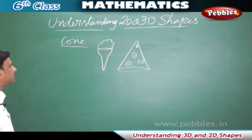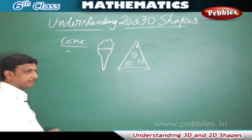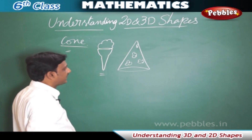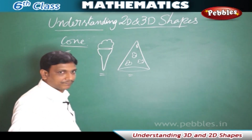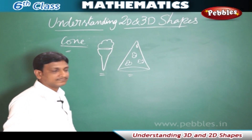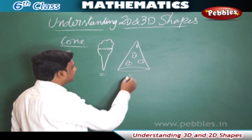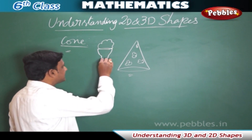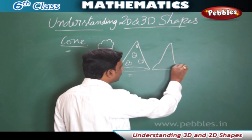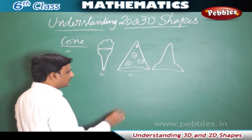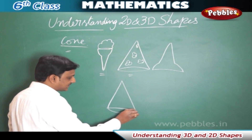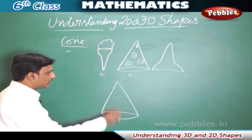Now let us learn about another 3D shape: the cone. In our daily life we see objects like an ice cream cone and a birthday cap, which are in cone shape. A birthday cap is directly in cone shape, and if you invert an ice cream cone it also takes the cone shape. A cone has a circular base.